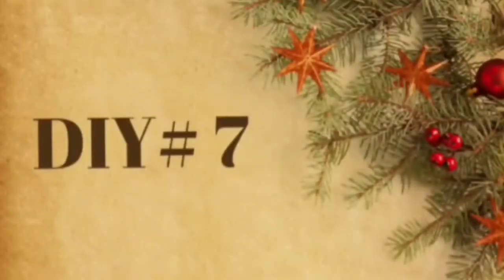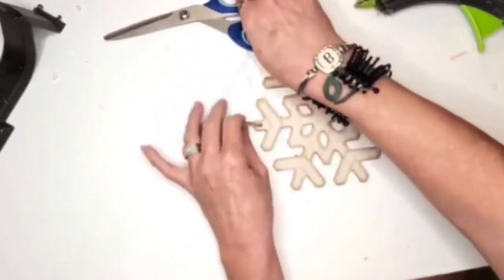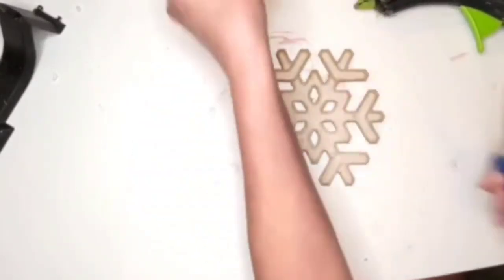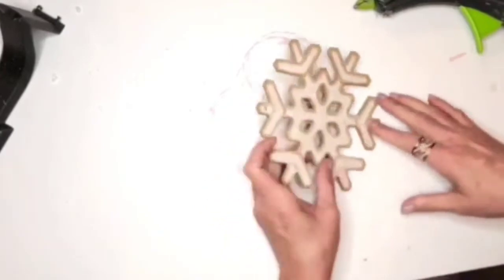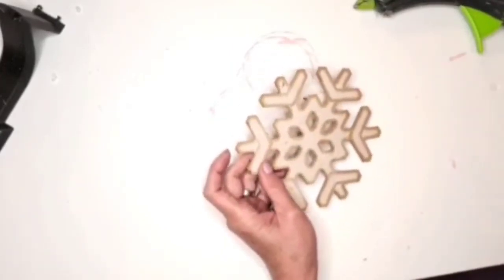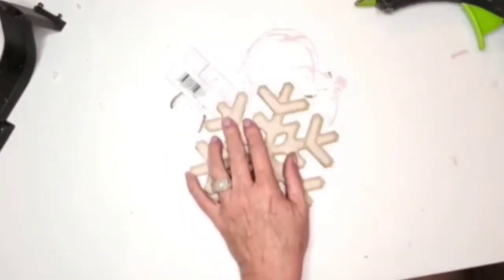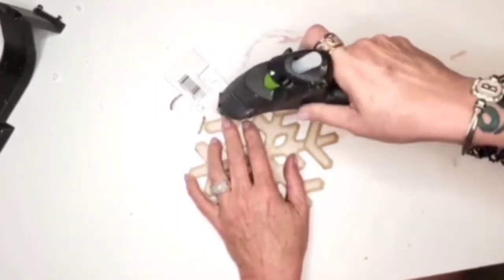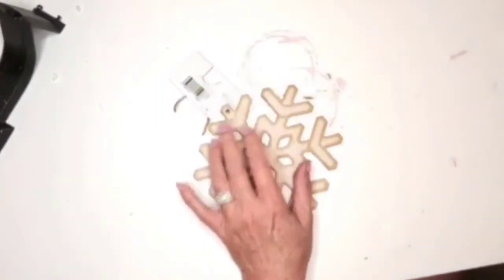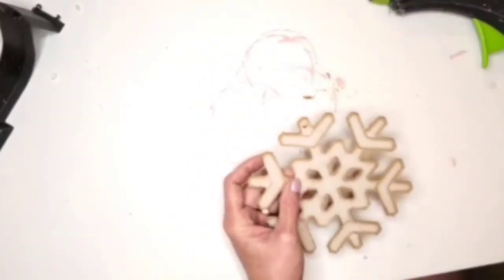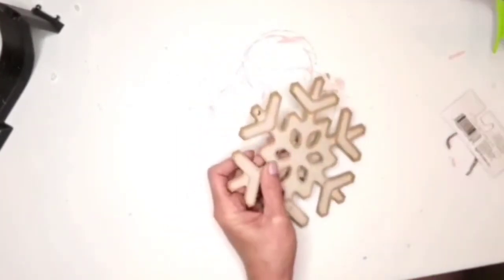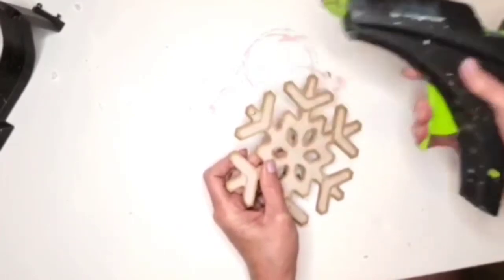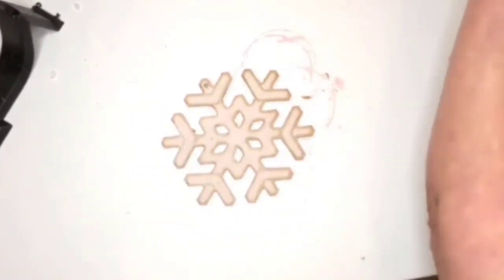After we have DIY number seven. That's a blooper. I have a snowflake as you can see, picked it up from the Dollar Tree. What I'm doing is just filling in the little hole with some hot glue because I couldn't find my spackle but this worked fine. I'm going in with the color Apple Barrel White and I'm just going to paint the whole thing.